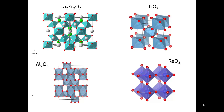Consider these four compounds and their crystal structures shown here. All four are metal oxides, and in each case the building unit is a metal-centered octahedron. Yet we've got four very different crystal structures for these four compounds, and the reason why we see this variety is in part because all four compounds have a different stoichiometry, a different empirical formula.